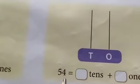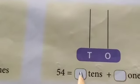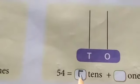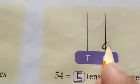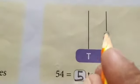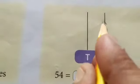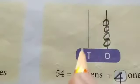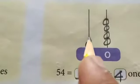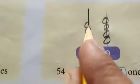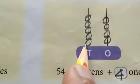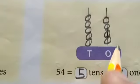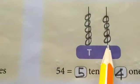The next number is fifty-four. Fifty-four has five tens and four ones. Four ones and five tens. Five tens means fifty. Fifty plus four — fifty-four.